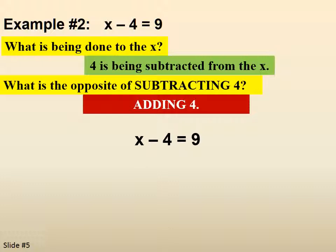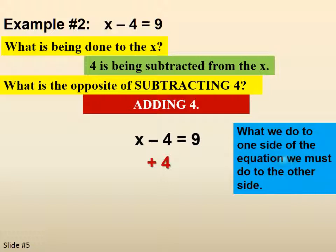x minus 4 equals 9. So now we're going to add 4. Again, whatever we do to the left side or one side, we have to do to the other side. And now we get to add vertically. x comes down. Negative 4 plus 4 is 0. And 9 plus 4 is 13.